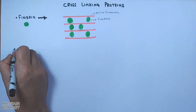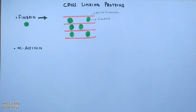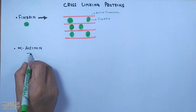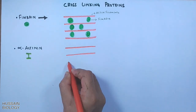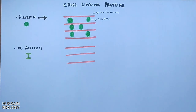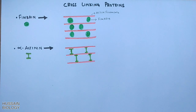The second cross-linking protein is alpha-actinin, which also helps bundle filaments similarly to fimbrin, but its shape is more like a dumbbell, and alpha-actinin loosely packs the filaments compared to fimbrin.